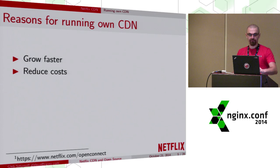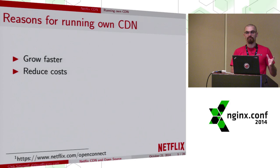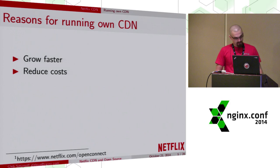When Netflix started its instant video streaming service, initially we outsourced content delivery to the big three CDNs: Level 3, Akamai, and Limelight. But as the online video service grew in popularity, the amount of traffic grew rapidly — faster than the CDNs could build themselves up. Soon it was clear that video delivery over the internet is the principal activity of Netflix. We are no longer a company that ships DVDs — we are a video streaming company. And if this is a principal activity, we probably should not outsource it.